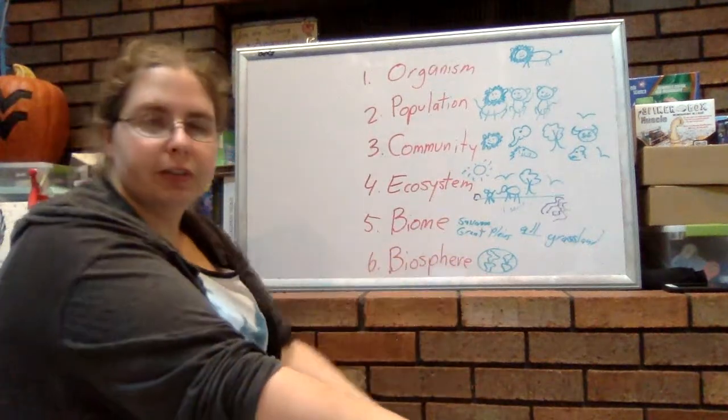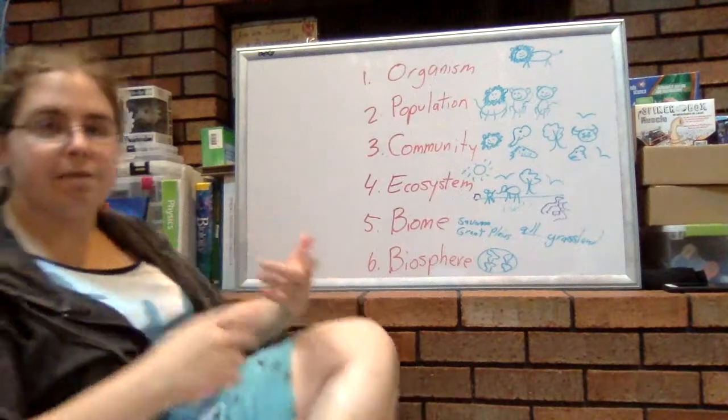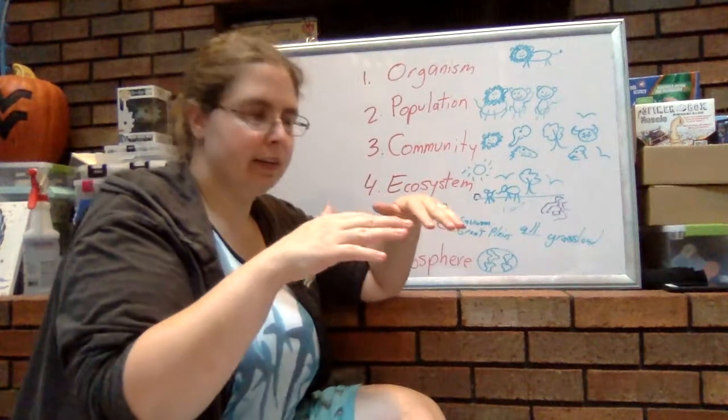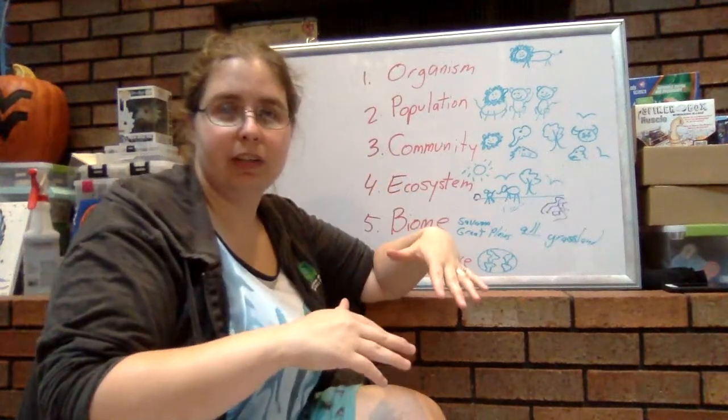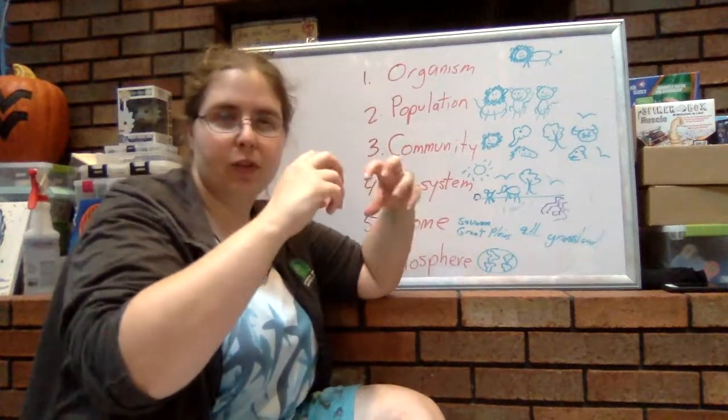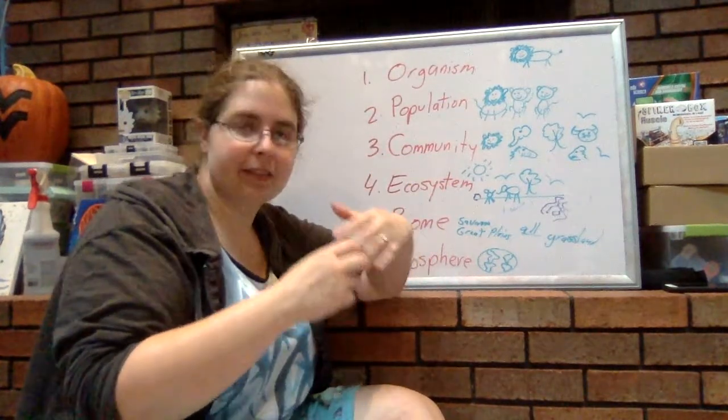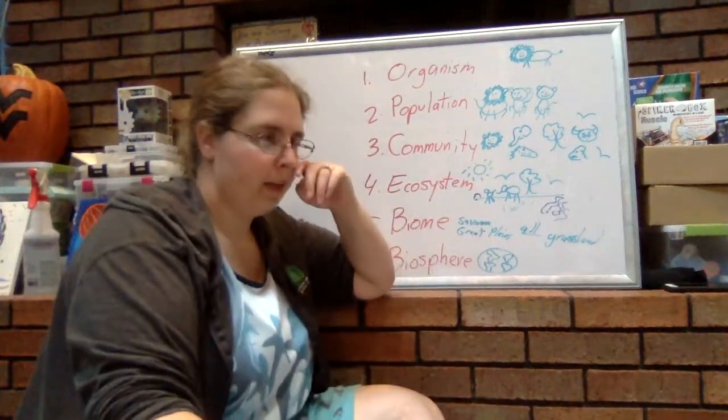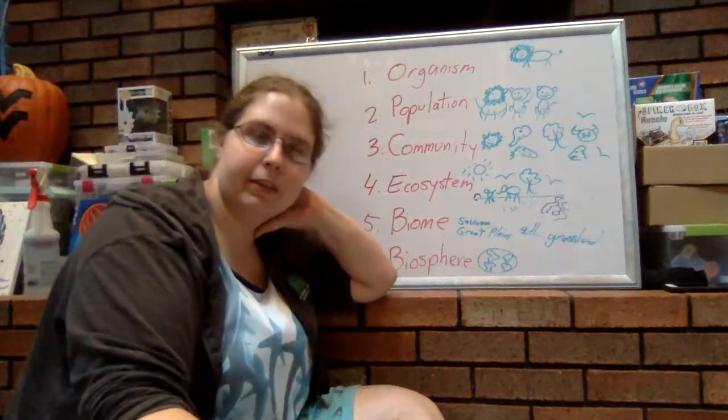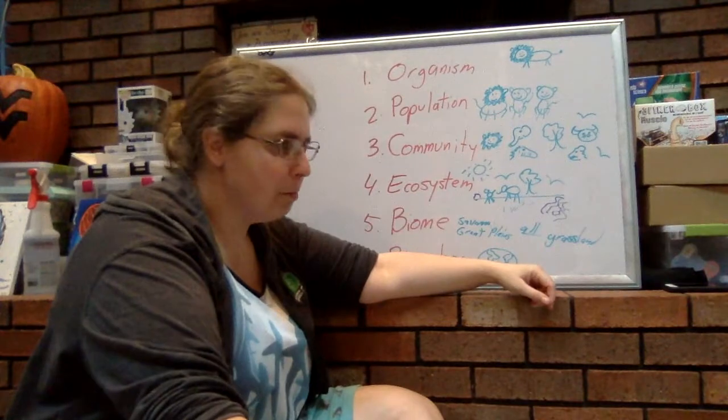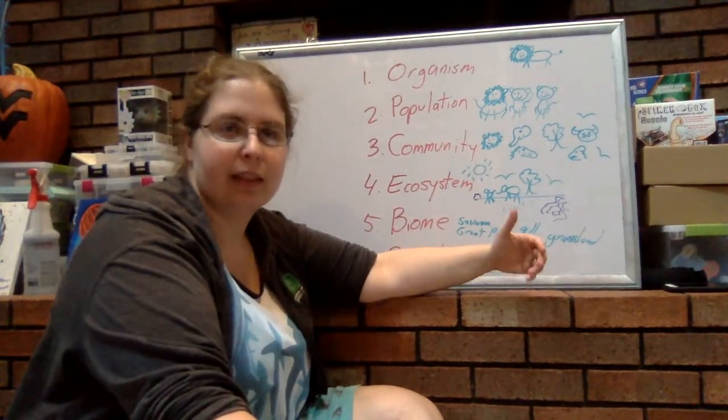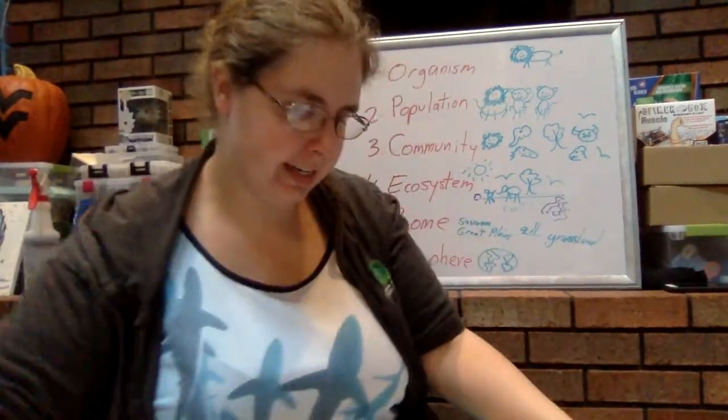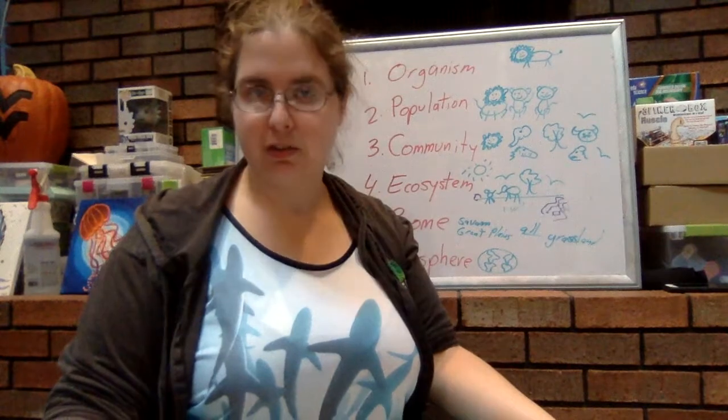And then the biosphere is a part of the planet where life exists. So in other words, it's all of the biomes. It's not just the surface of the planet. It's also as deep into the ocean as life exists, as deep into the soil as life exists, because things dig through the soil, not just on the soil on land, but also in the ocean. And it's also as far into the air as life exists, because things fly. So the biosphere is a part of our planet where life exists. Alright, so I hope that kind of helps you figure out and understand the different levels of ecological organization.